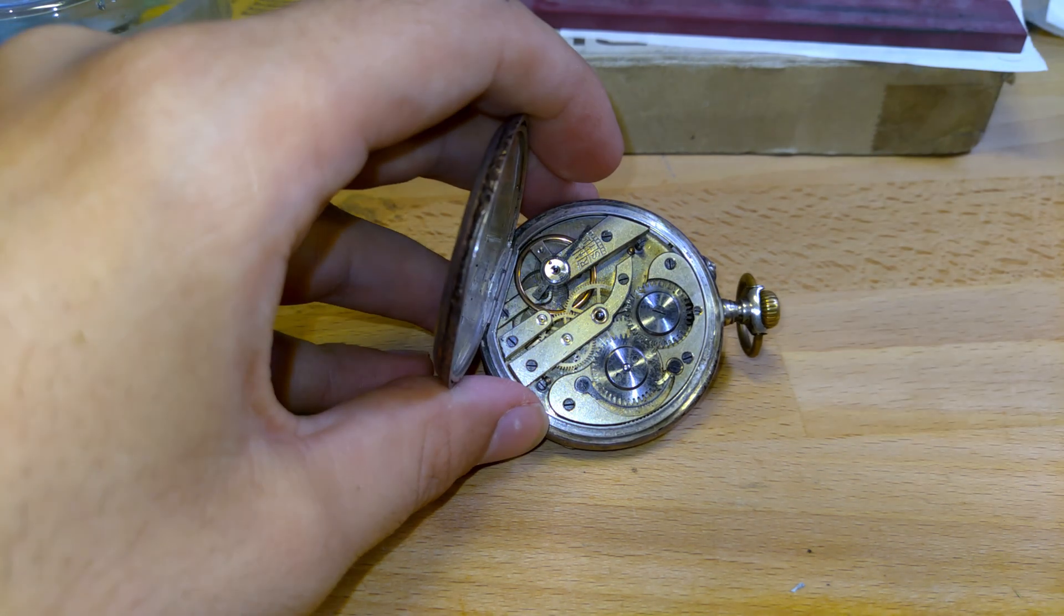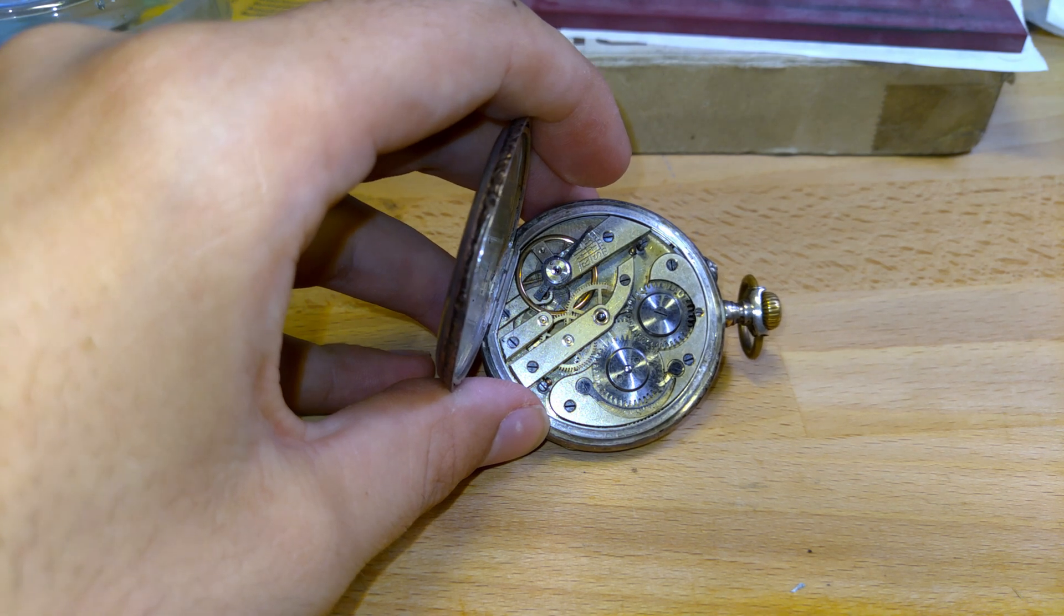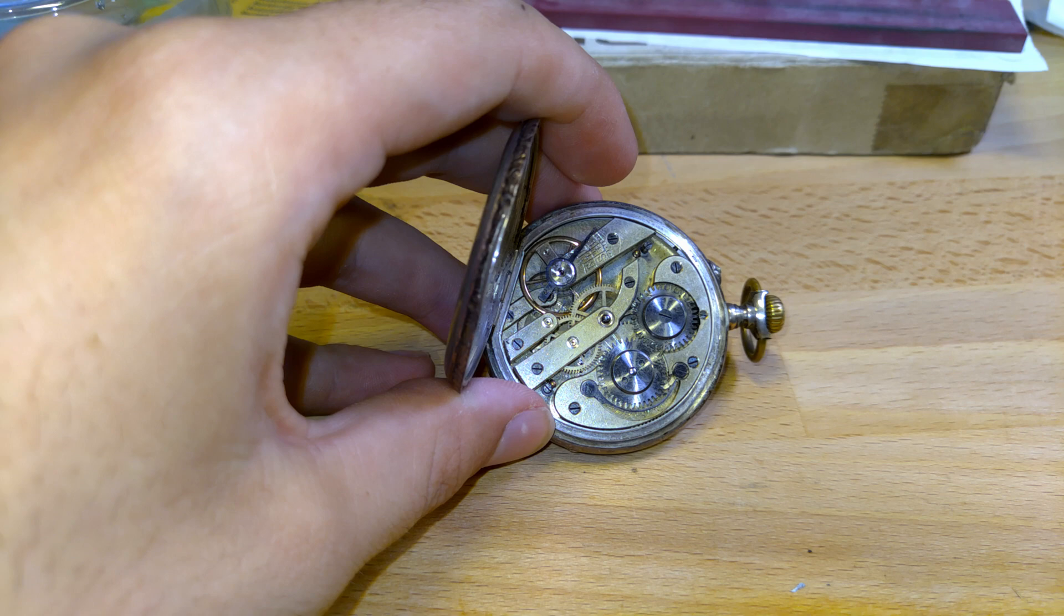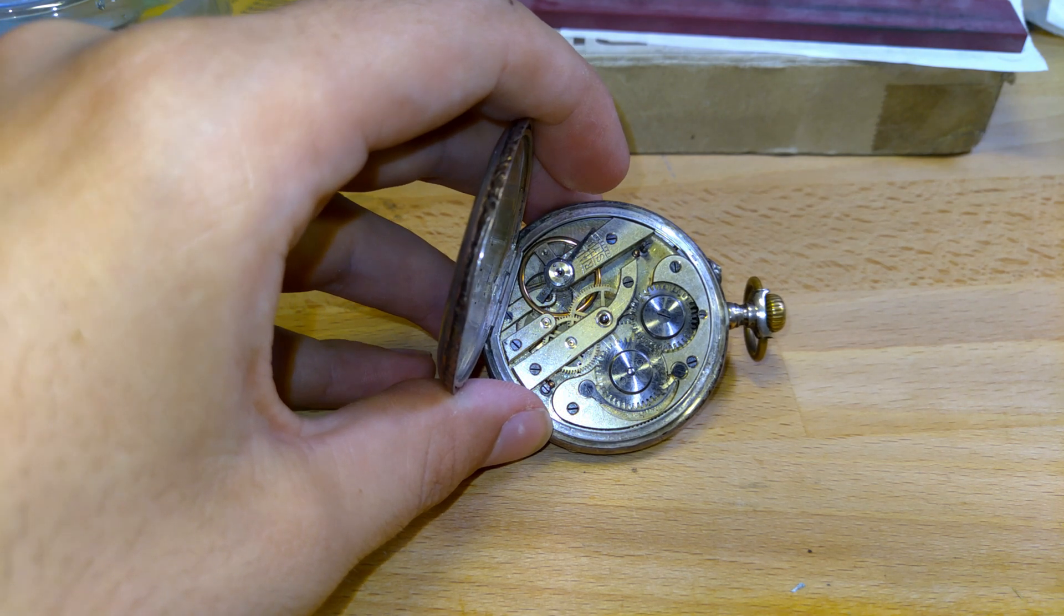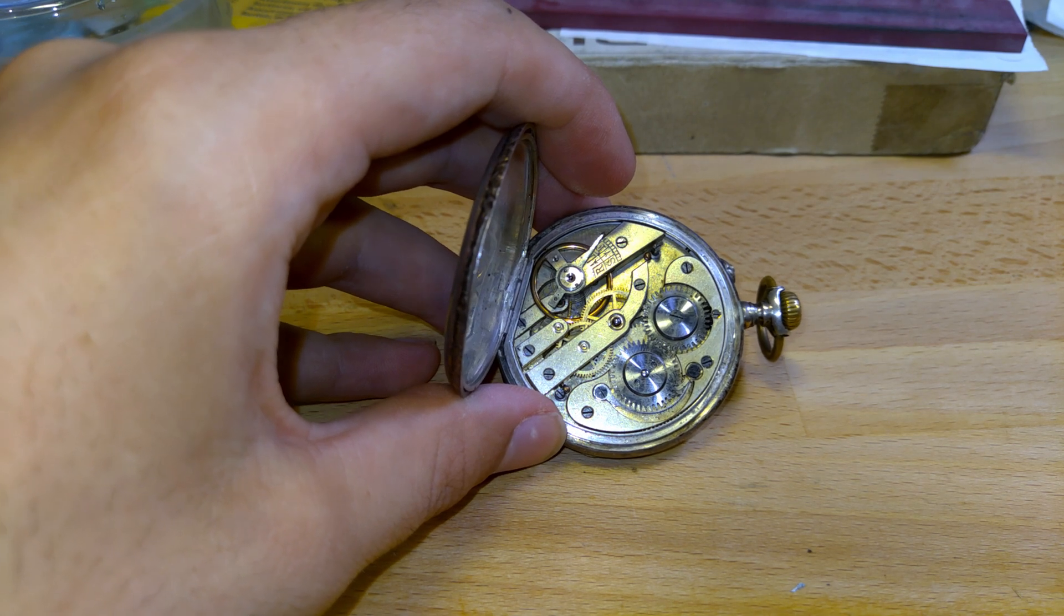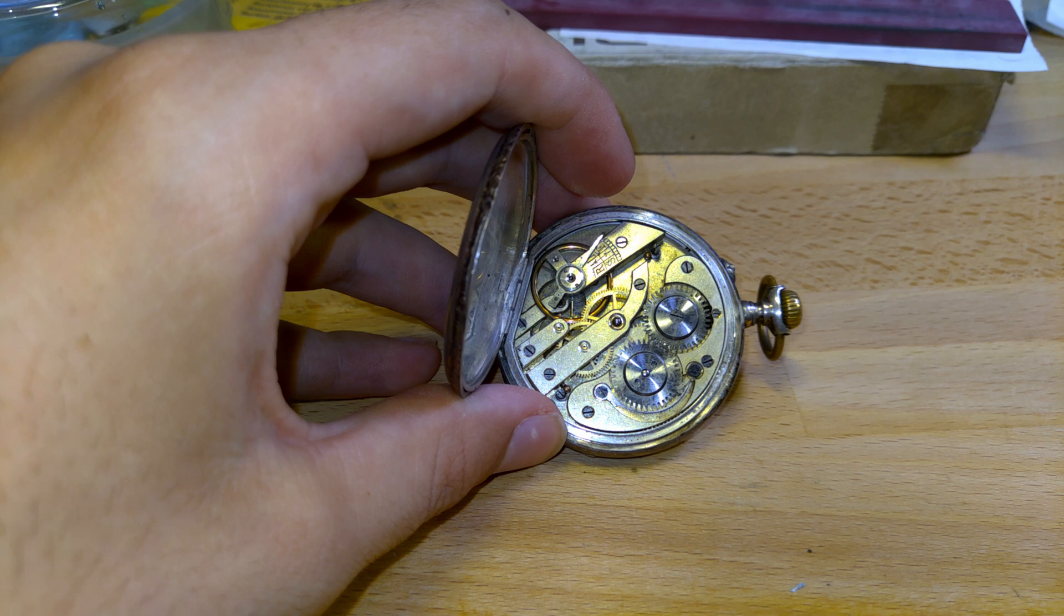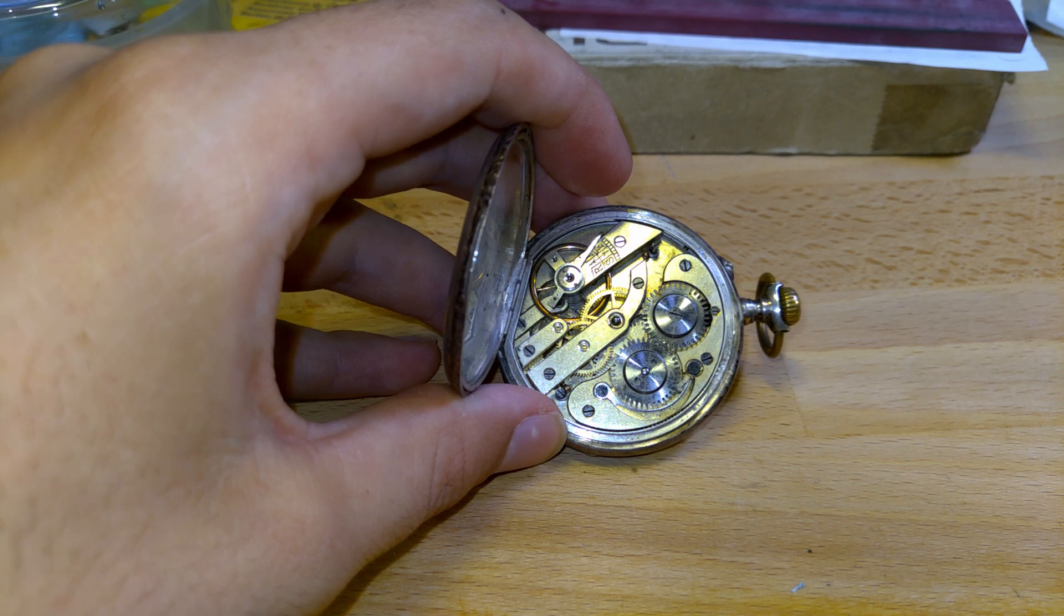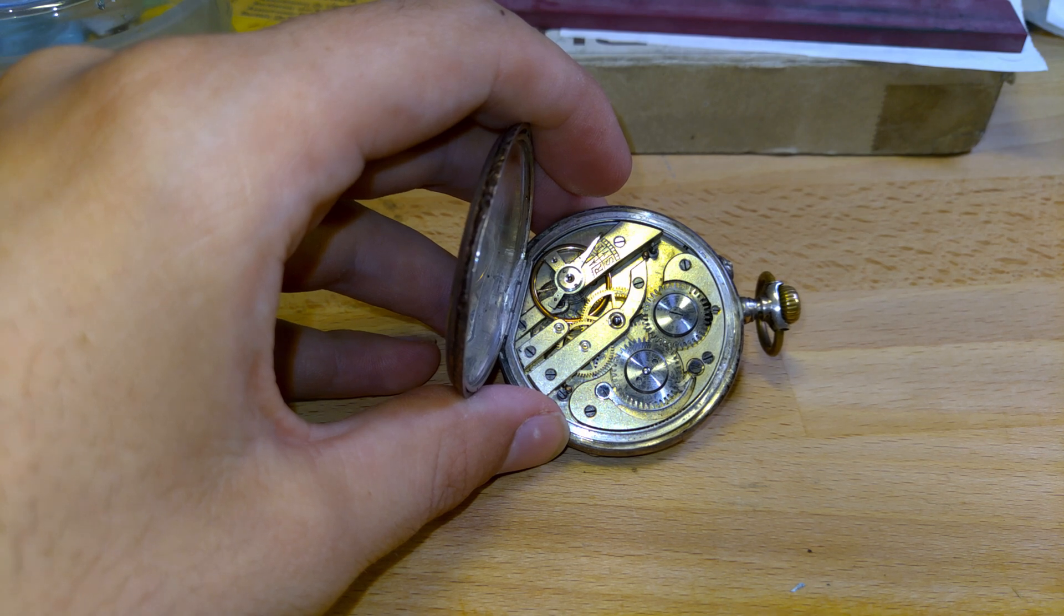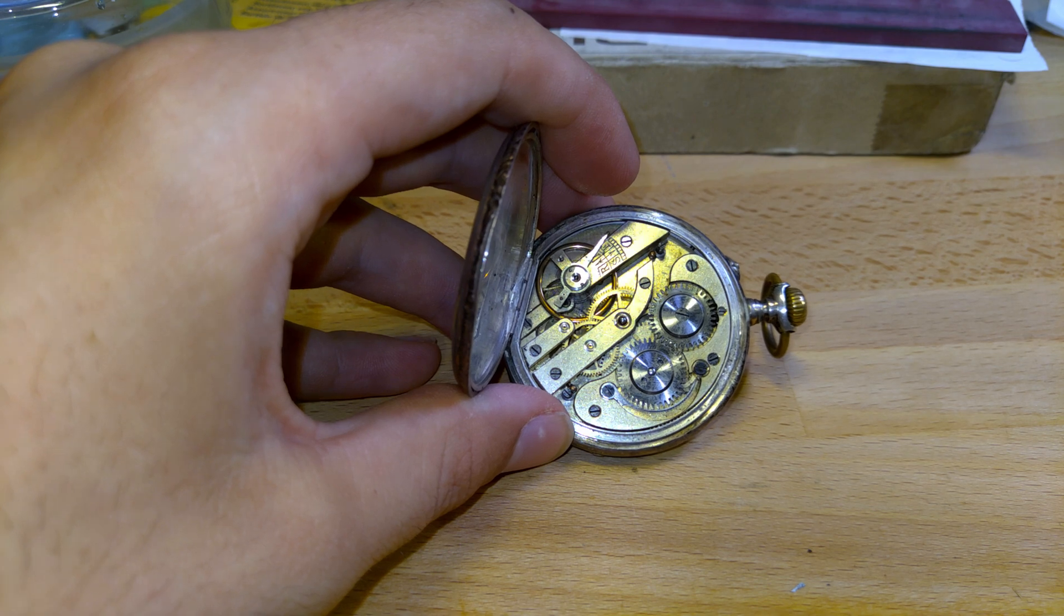The cylinder escapement is basically the fear of a lot of watchmakers, and that has to do with how crappy it is. It was a cheap escapement to produce and could be made using simple tools, but it is really susceptible to wear.